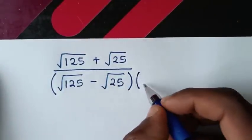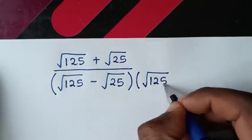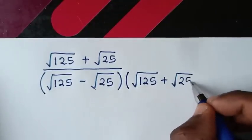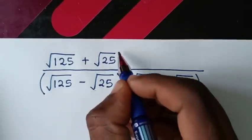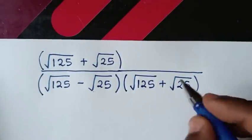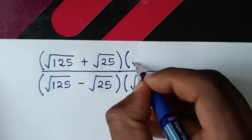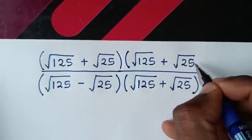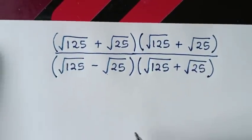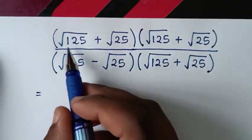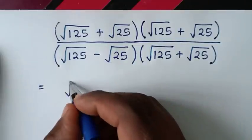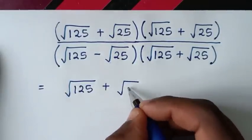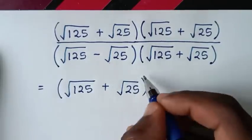We multiply both numerator and denominator by the conjugate of the denominator, which is square root of 125 plus square root of 25. The numerator becomes (√125 + √25) squared.